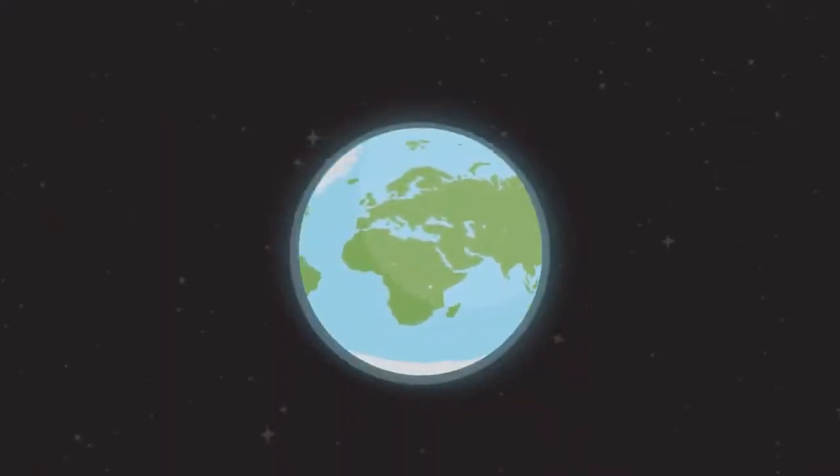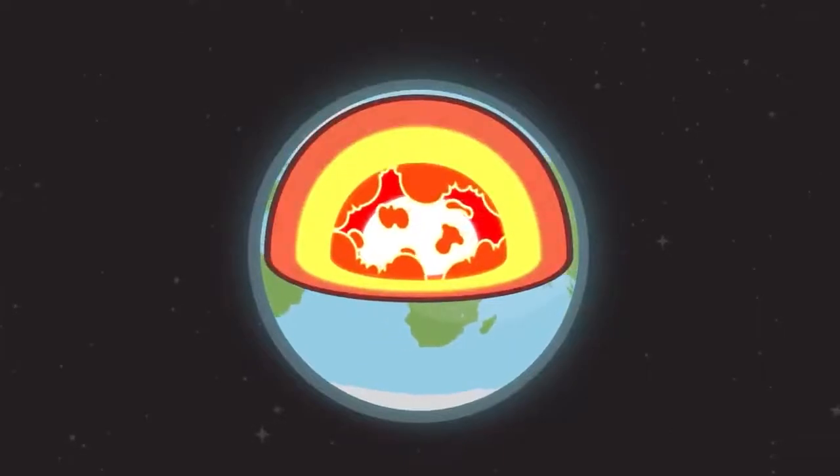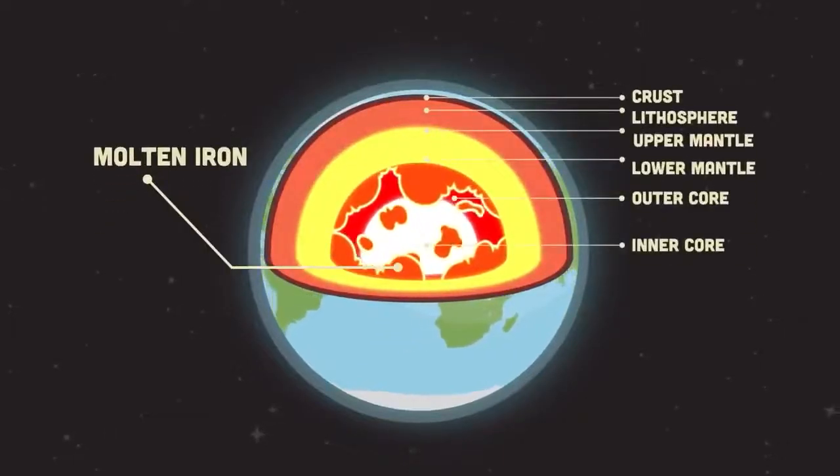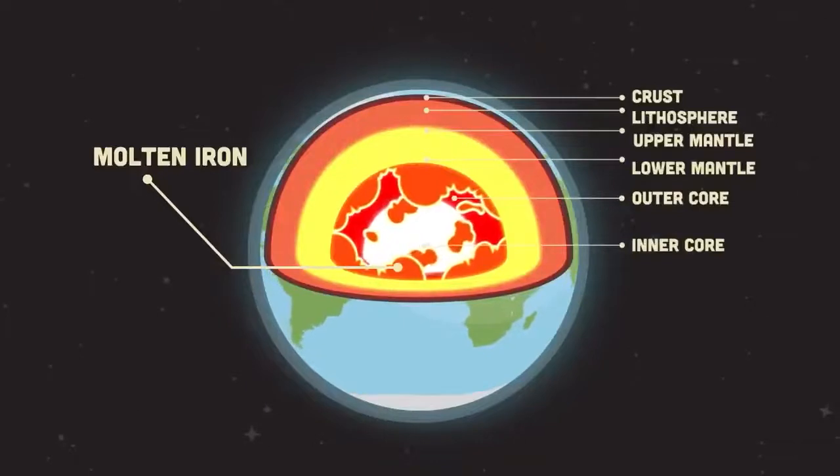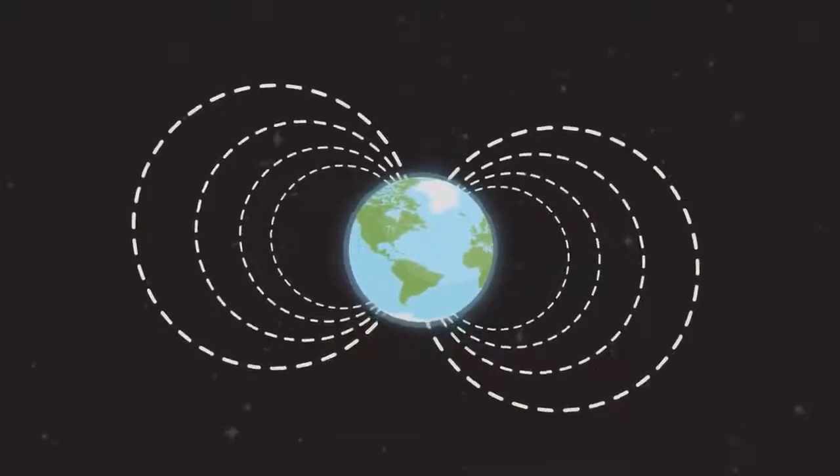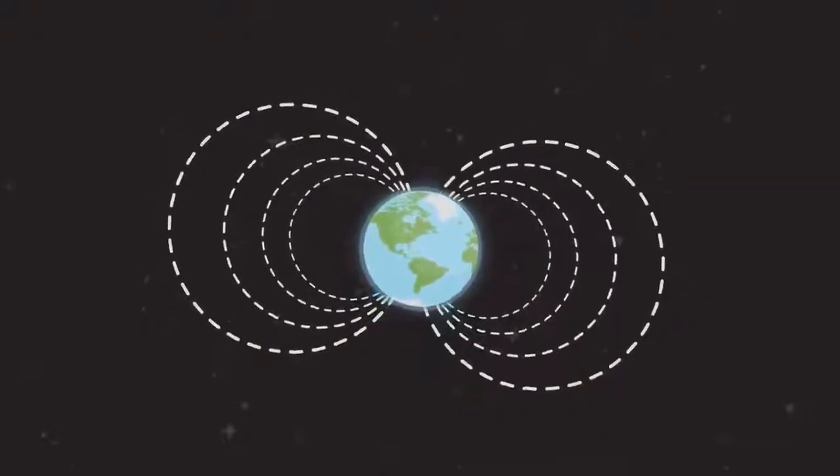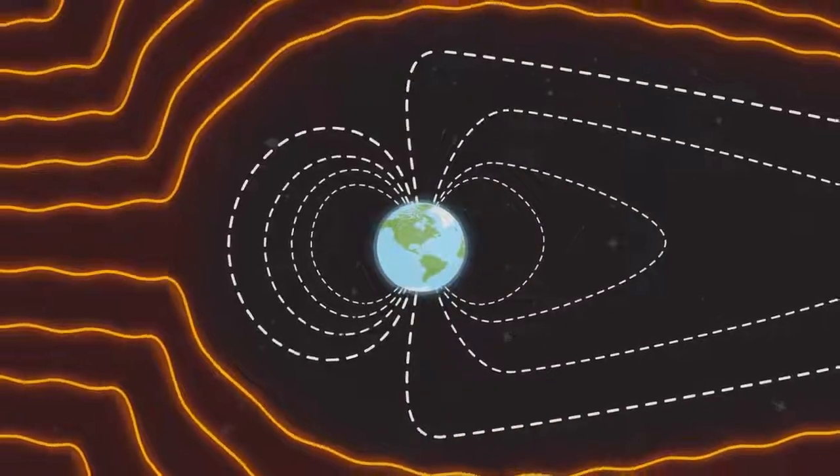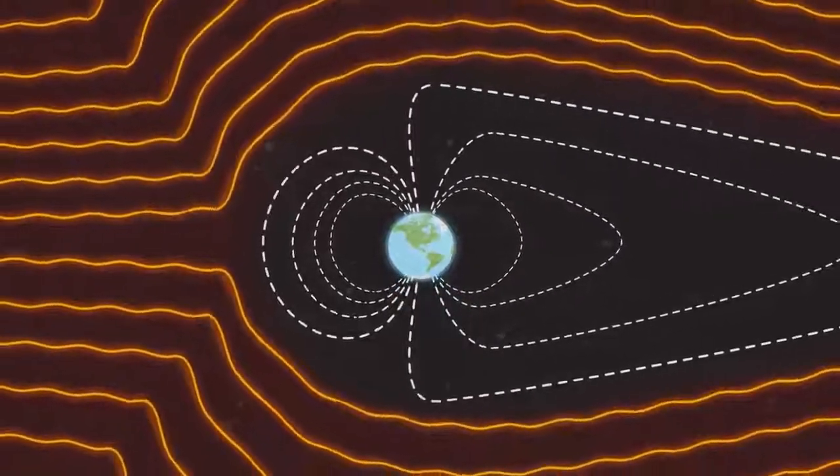Let's take a closer look at where this magnetosphere is formed. We'll slice the Earth in half so you're visually informed. The electrically charged molten iron churns below the Earth's surface within the planet's outer core. This generates a magnetic field large enough to extend far past our Earth's atmosphere out into space.